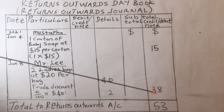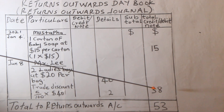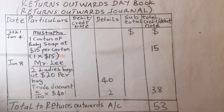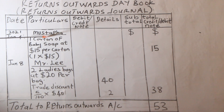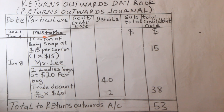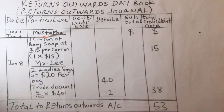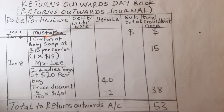Bear in mind that whenever there are returns, firstly ask yourself: who are we returning to? For example, Mustafa — who is Mustafa? He is the supplier. Then take into consideration the unit price of the goods purchased on credit from Mustafa, and check whether there is a discount attached to it.